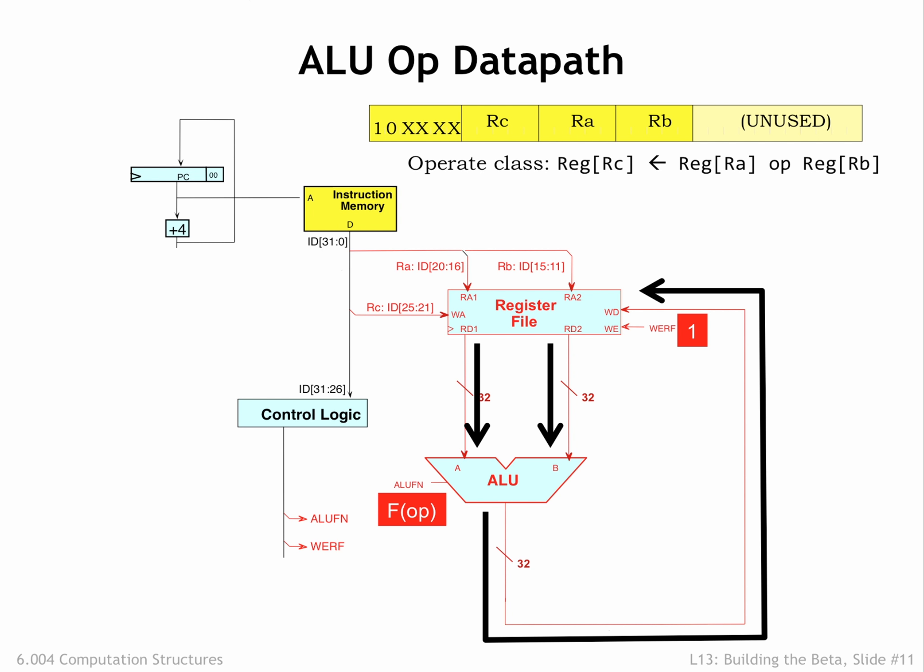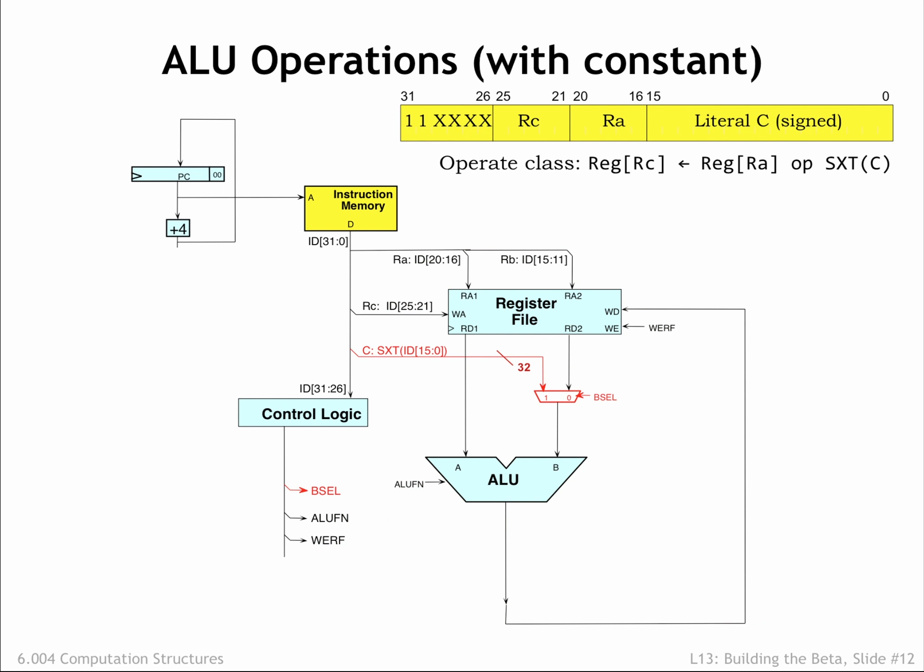Here we see one of the major advantages of a reduced instruction set computer architecture: the datapath logic required for execution is very straightforward. The other form of ALU instructions uses a constant as the second ALU operand. The 32-bit operand is formed by sign-extending the 16-bit 2's complement constant stored in the literal field of the instruction. We added a MUX to the datapath — when its BSEL control signal is 0, the output of the register file is selected; when BSEL is 1, the sign-extended constant is selected as the operand.